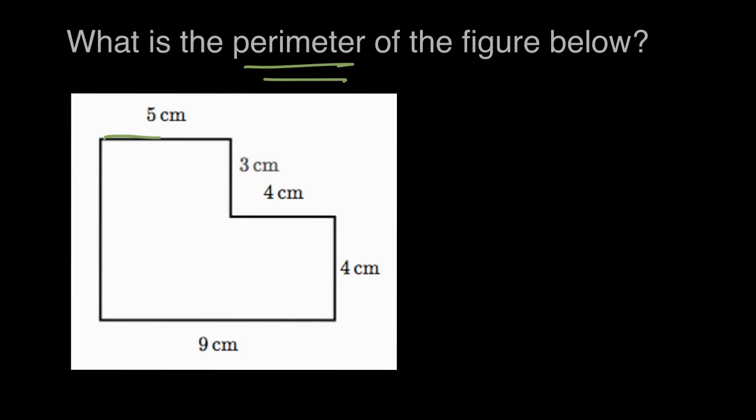So let's start, we can start up here. We can see that this side length is five centimeters. So we have five centimeters, plus moving down the side here, we have another three centimeters, and then going across, next distance is four centimeters.